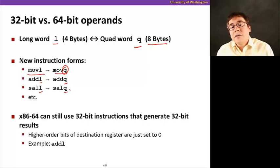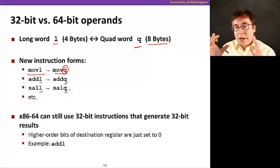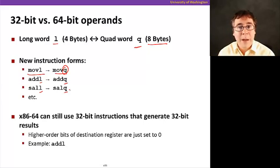Also note that X86-64 can also use all the 32-bit instructions that generate 32-bit results. Like I showed in the previous slide, we can reference the low order 32 bits of some 64-bit registers with the same name as we used in 32-bit ISA. And the high order 32 bits are set to zero.